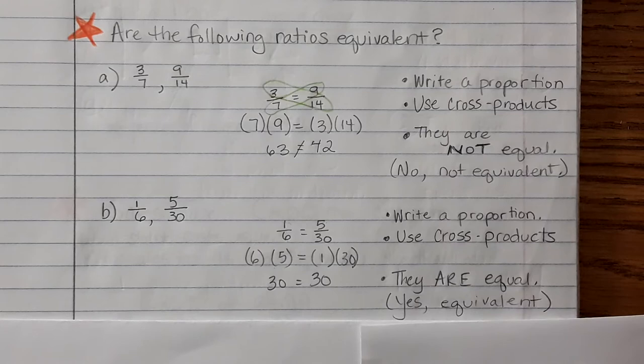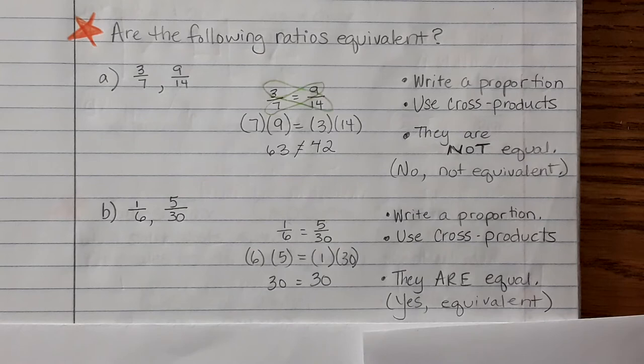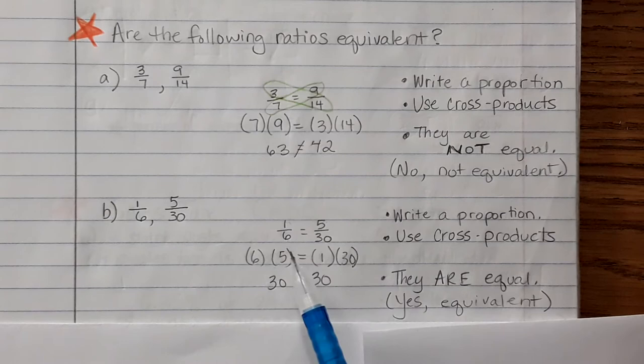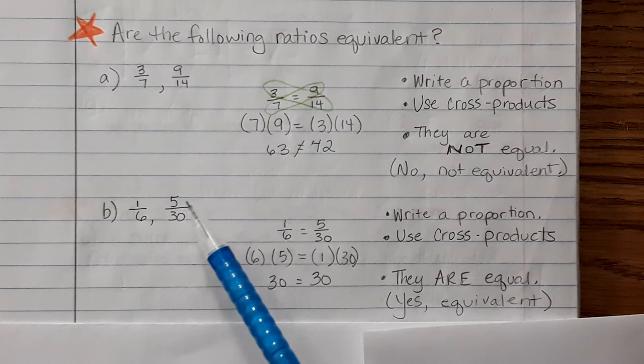In summary, write a proportion with your two ratios. If the cross products are not equal, the ratios are not equivalent. If you write your proportion and use cross products and the cross products are equal, then the two ratios are equivalent. In other words, 1 out of 6 is the same thing as 5 out of 30, and we know this because we can reduce or simplify 5 over 30 and get 1 over 6.